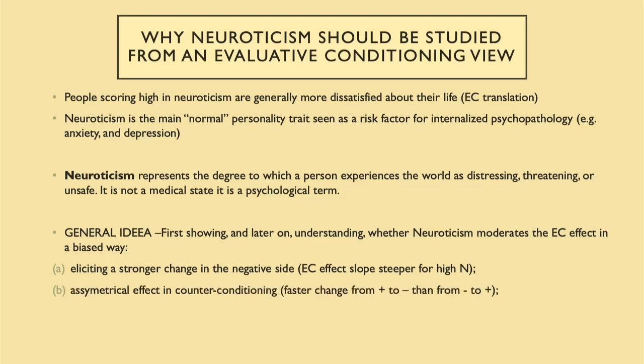Or maybe it's an asymmetrical effect. For instance, in counter-conditioning, they can be faster in changing from positive to negative, but not so fast when changing from negative to positive. Or they may be more eager to rely on this evaluation — for instance, in a halo effect or horn effect, or a kind of generalizability effect. So if they learn something about a person that is negative, they may be more willing to infer some negative aspects about that same person, even those that were not known facts.